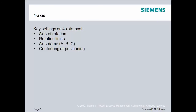When you're creating a multi-axis post-processor, you need to understand some of the key settings for that 4-axis machine tool and also for the post-processor itself. You should understand the axis of rotation — in other words, what linear axis does this particular rotary axis rotate about. You should also understand the rotation limits: can it go from 0 to 360, or from minus 3,600 to positive 3,600? Some axes have limits, some don't. You also need to understand the axis name, the direction of rotation for that axis, and whether it is a contouring or positioning axis.